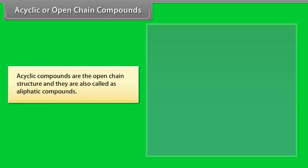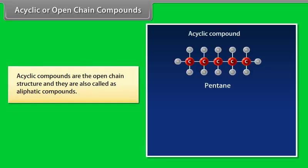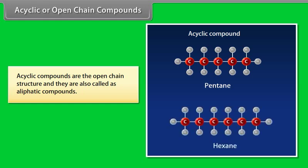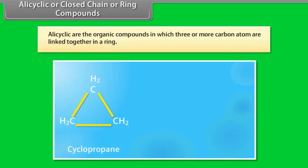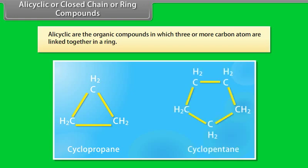Acyclic compounds are the open-chain structures and they are also called aliphatic compounds. Alicyclic or closed-chain or ring compounds are the organic compounds in which three or more carbon atoms are linked together in a ring.